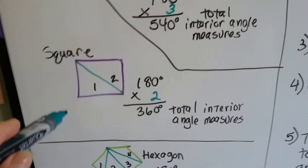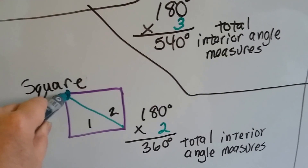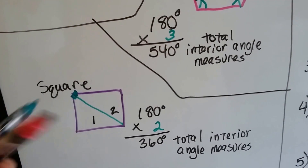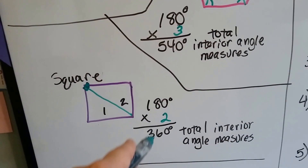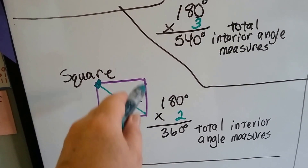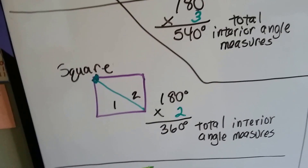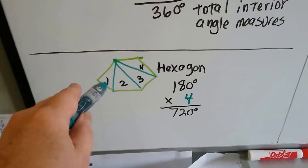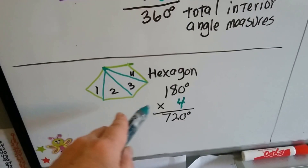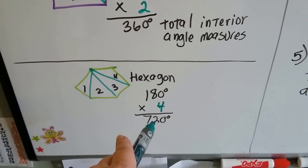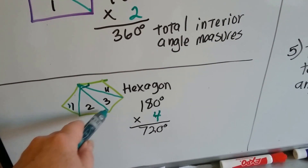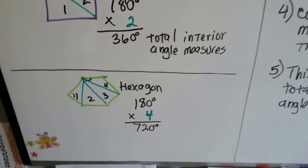For a square, I chose a vertex and could only draw one line to the opposite vertex, making 2 triangles — that's 360 degrees for the total interior angle measures. That makes sense because each angle is 90 degrees and 90 times 4 is 360. For a hexagon, I drew 3 lines which created 4 triangles, giving an interior measure of 720 degrees when I multiplied 4 times 180.